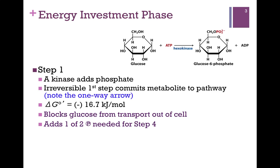That large favorable delta G makes this an irreversible reaction, indicated by the one-way arrow. We need that phosphoryl group eventually, and adding it in Step 1 commits the molecule to the rest of the pathway and sequesters glucose inside the cell. We have glucose transporters, so if glucose concentration builds inside the cell, it will flow down its concentration gradient and out of the cell. By converting glucose to glucose-6-phosphate, we keep it inside the cell because we don't have glucose-6-phosphate transporters.